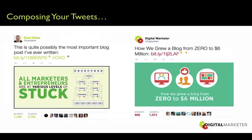Here are a few more examples. On the left, this goes to our customer value optimization blog post, which explains our business model — it's coming from Ryan, so we use a little more personality: 'This is quite possibly the most important blog post I've ever written.' On the right, we kept it straight to the point for a blog post about content marketing: 'How We Grew a Blog from Zero to 6 Million,' with a really engaging image reiterating the headline.